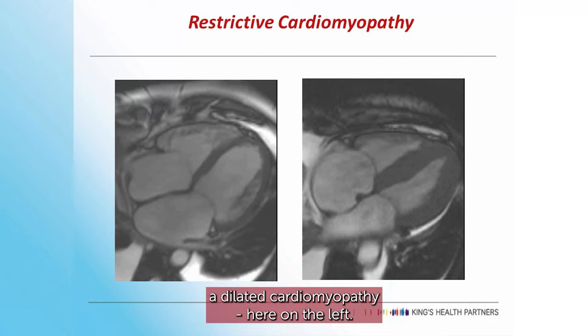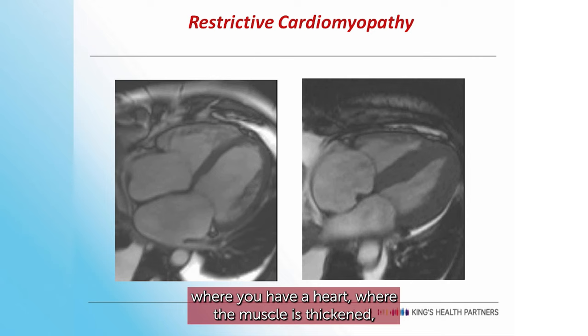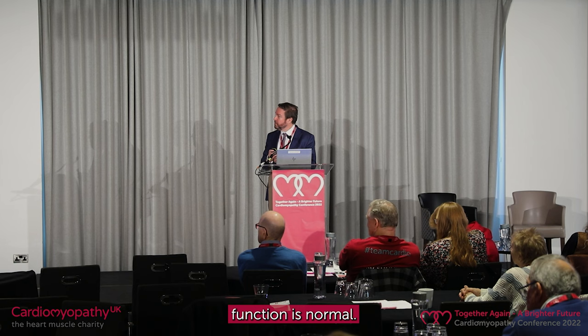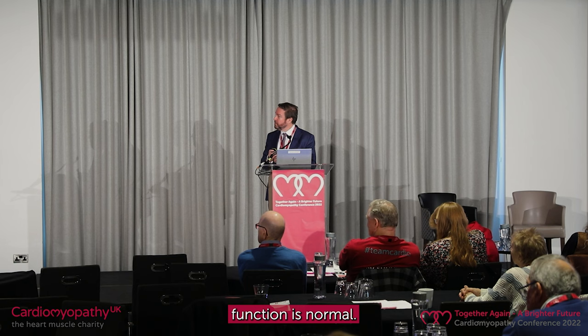This is the difference between a dilated cardiomyopathy on the left, and what a restrictive cardiomyopathy looks like — where you have a heart where the muscle is thickened but it's still a normal size and still has normal pumping function. That's what you see in hypertrophic cardiomyopathy, amyloid, and other conditions like that.